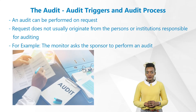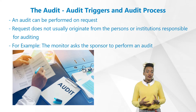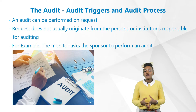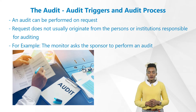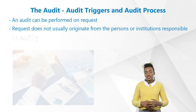What are audit triggers? First of all, an audit can be performed on request. This request does not usually originate from the sponsors or institutions responsible for auditing, but from third parties such as monitors — for example in cases where they have observed that a trial site is continuously violating the protocol despite repeated hints. In such a case, the monitor would ask the sponsor to perform an audit by an employee of the quality assurance department.